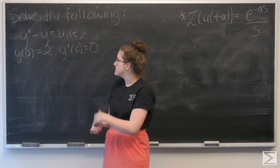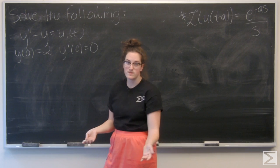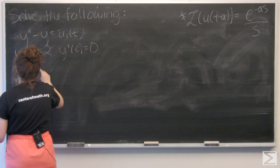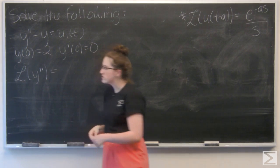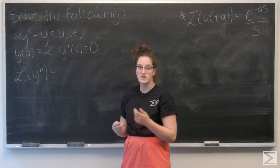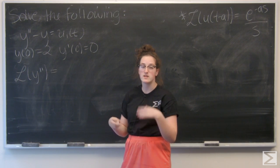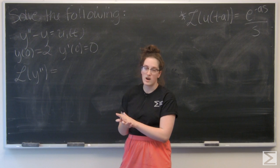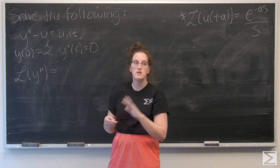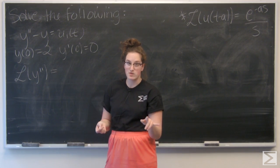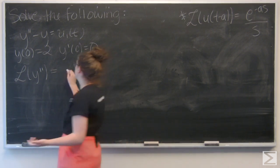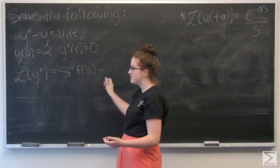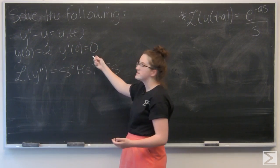To solve this, I'm going to use Laplace transforms. I just want to take the Laplace transform of each term in the equation. So let's start with y double prime. The Laplace transform of a second derivative is s squared F of s, where F is the Laplace transform of the parent function, minus s times the parent function at 0 minus the first derivative at 0. So here I'm going to have s squared F of s minus 2s minus 0.